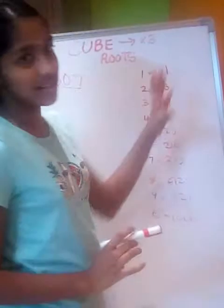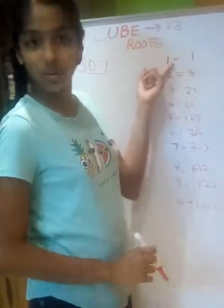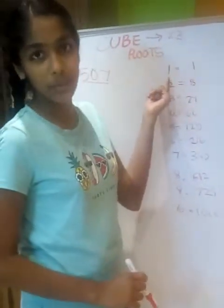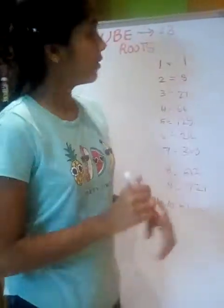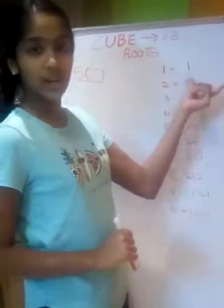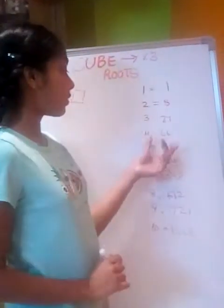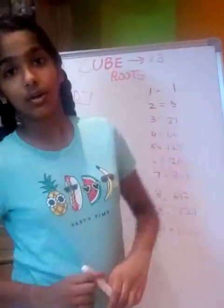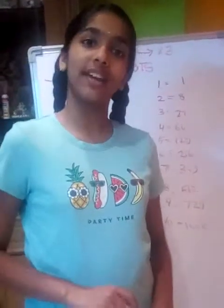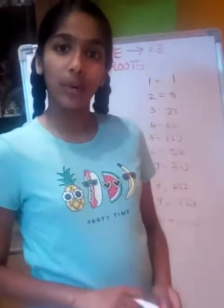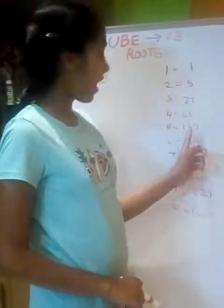Let us see a few examples. What is 1 cubed? 1 into 1 into 1 — if we multiply 3 times we will get 1. Now what is 5 cubed? 5 into 5 is 25, and 25 into 5 is 125. So 125 is the answer for 5 cubed.